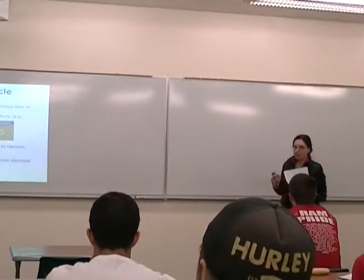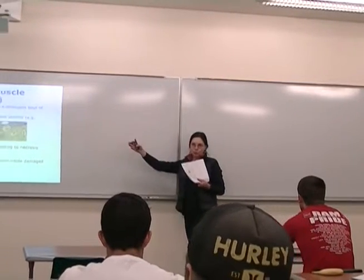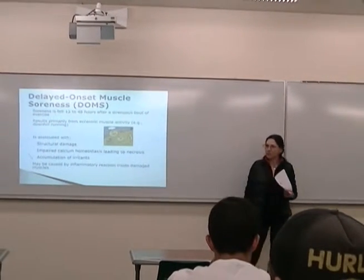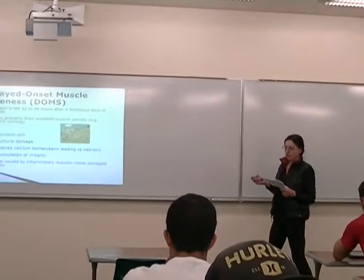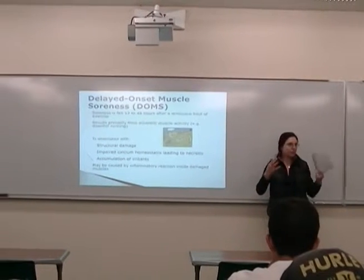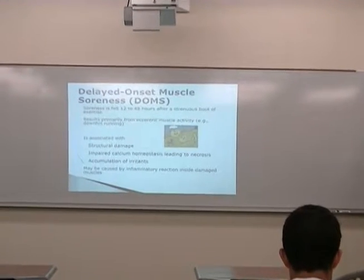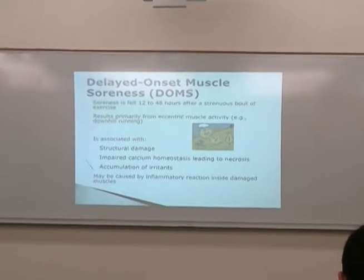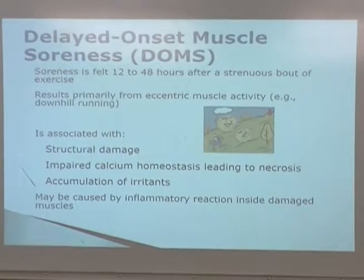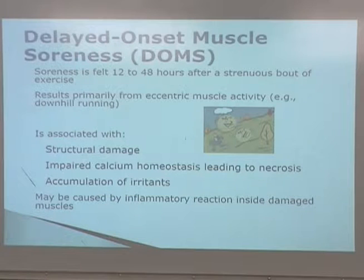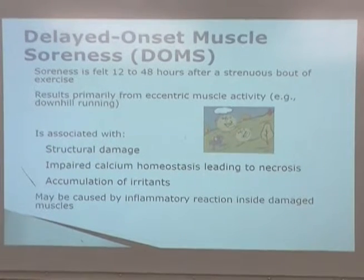We get little micro tears every time we train. The more eccentric work we do, the more damage we see. We also see some calcium issues within the muscle, and we see a lot of irritants build up — especially when there's a lot of damage, because things get released. Inorganic phosphates and other chemicals get released from the muscle fiber and cause problems. We get swelling, and the oedema is the thing that really causes the pain, because the swelling presses on the pain receptors in the muscle tissue. Soreness isn't lactic acid — lactic acid doesn't cause soreness. Soreness is caused by structural damage, and it's mainly the eccentric portion of the move that does the damage.